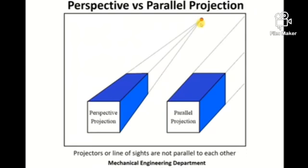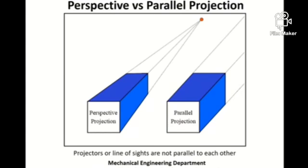In this case, out of three directions, one direction's edges appear to merge at one point, so this is called a one-point perspective projection system. Later we will also see examples where even the edges along the width direction are non-parallel, giving rise to a two-point perspective system. And another case where even the vertical edges are non-parallel gives you a three-point perspective projection system.